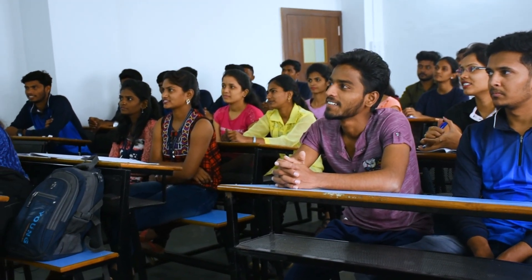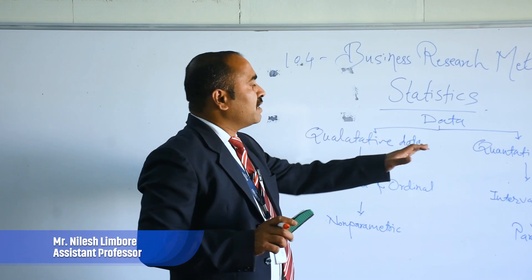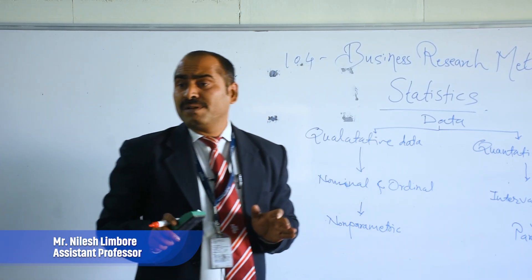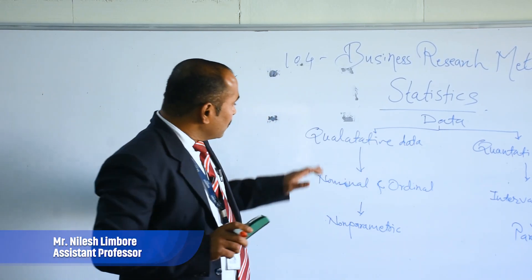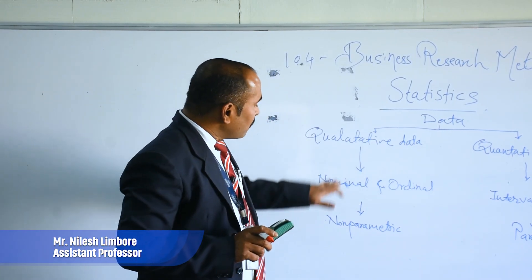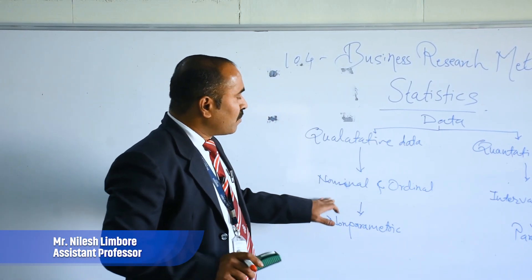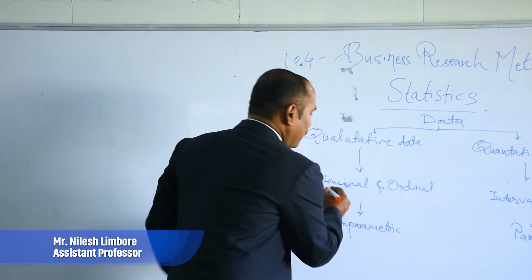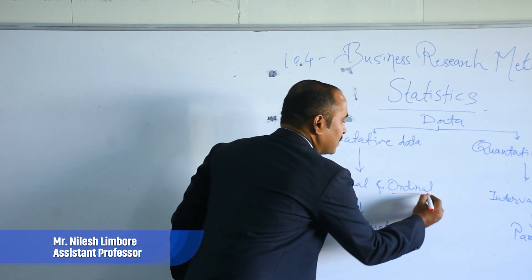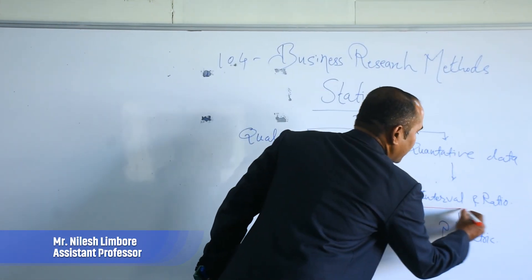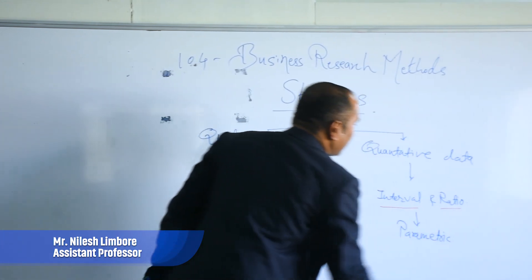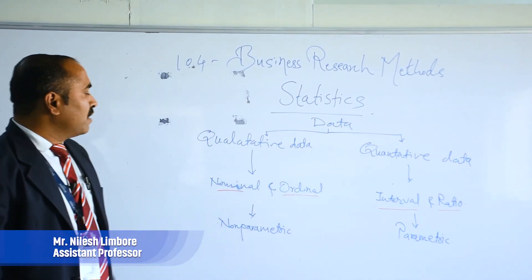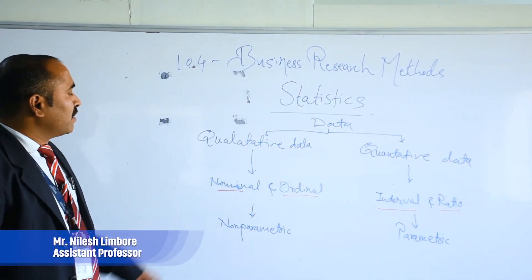There is qualitative and quantitative — these are the two major types of data. In qualitative there is nominal and ordinal type of data, and in quantitative there is interval and ratio data.